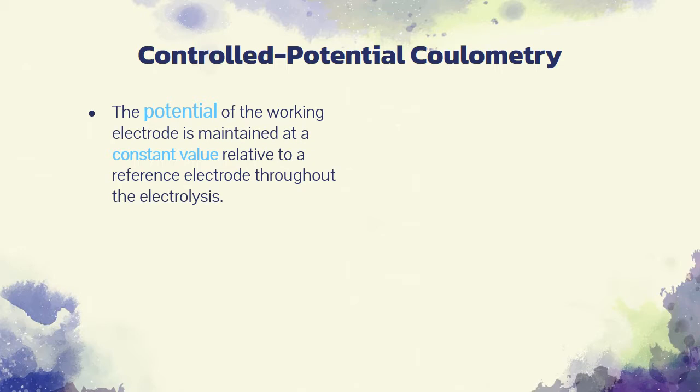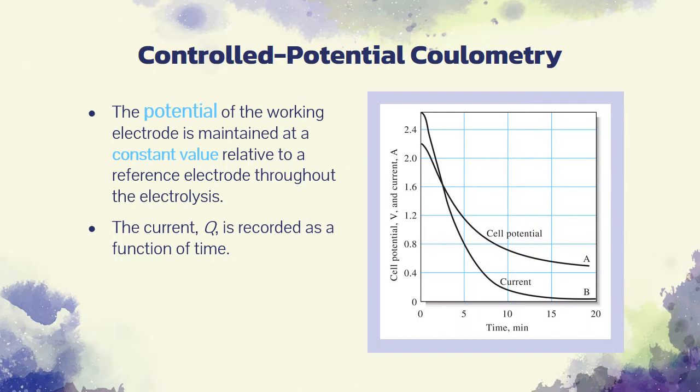Potentiostatic methods are performed with the potential of the working electrode being maintained at a constant value relative to a reference electrode throughout the electrolysis. In controlled potential coulometry, the electrolysis current is recorded as a function of time to give a curve similar to curve B in the figure. The analysis is then completed by integrating the current time curve to obtain the charge, and from Faraday's law, the amount of analyte.